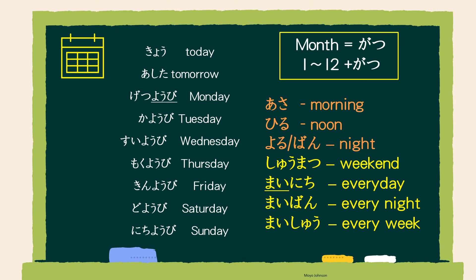Let's also look at other time-related vocabulary. Today is 今日, tomorrow is 明日. The days of the week from Monday to Sunday are 月曜日、火曜日、水曜日、木曜日、金曜日、土曜日、日曜日 — with 曜日 acting as the counter for the days of the week. Learning the months in Japanese is straightforward: simply add the counter 月 for month to the numerical representation of each month. For example, January is 一月, February is 二月, March is 三月, and so on.